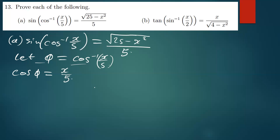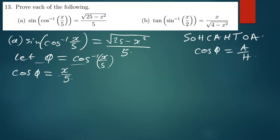So if this is what we have, using SOHCAHTOA, when you're dealing with cos, we know that cos φ is just given by the adjacent over the hypotenuse. So meaning if we have these values — x over 5 — we know that x is the adjacent and 5 is the hypotenuse. So we draw the triangle there. This is our φ, and our adjacent to this φ is simply just x.